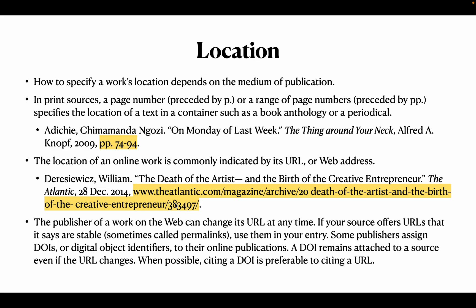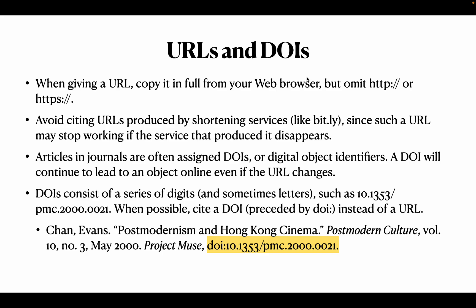Sometimes the URL can change. The URL that does not change is called a permalink. Otherwise, you have to cite the DOI — digital object identifier — instead of a URL. When you cite a URL, omit http:// or https:// — you do not need to include it. Also, do not use URLs produced by shortening services like bit.ly. Articles in journals are often given DOIs, so please look for the DOI. It should be cited like this: DOI followed by the identifier.